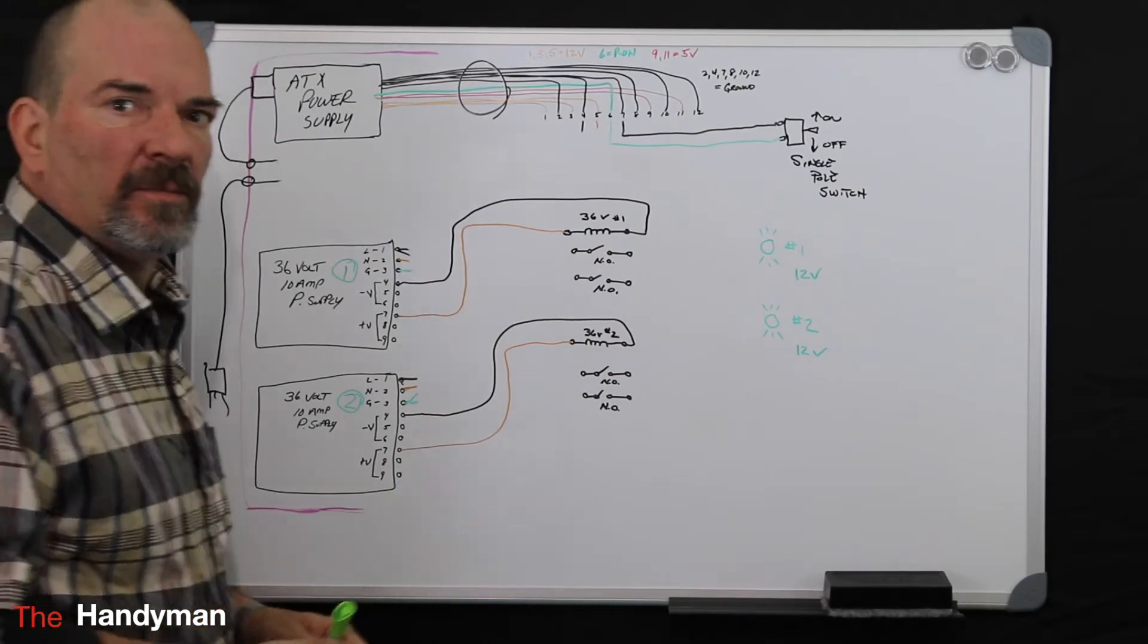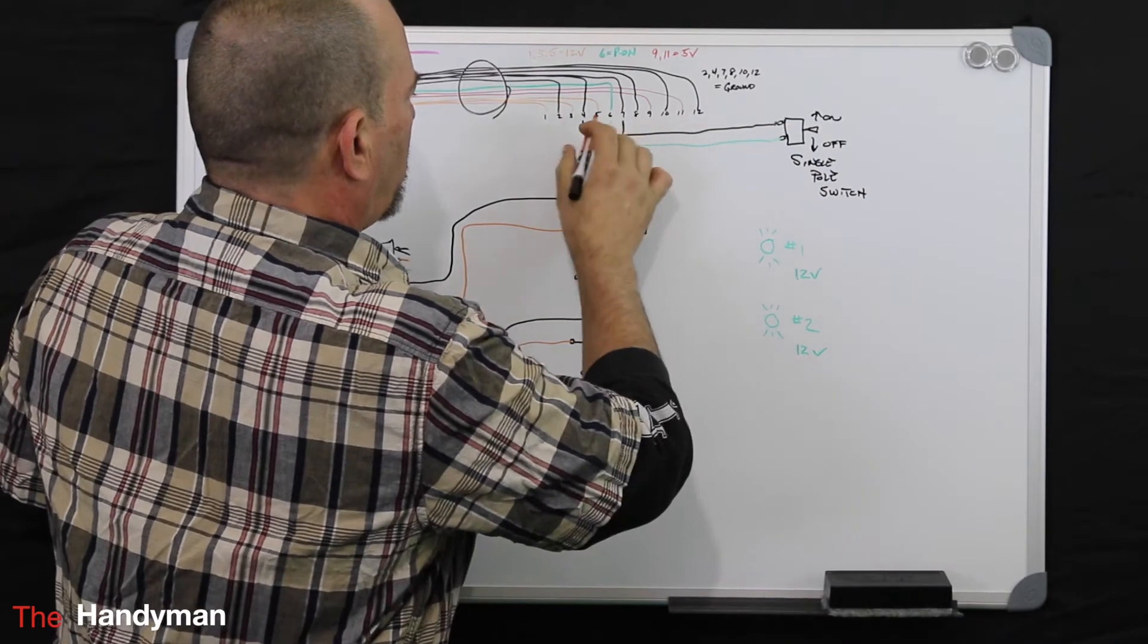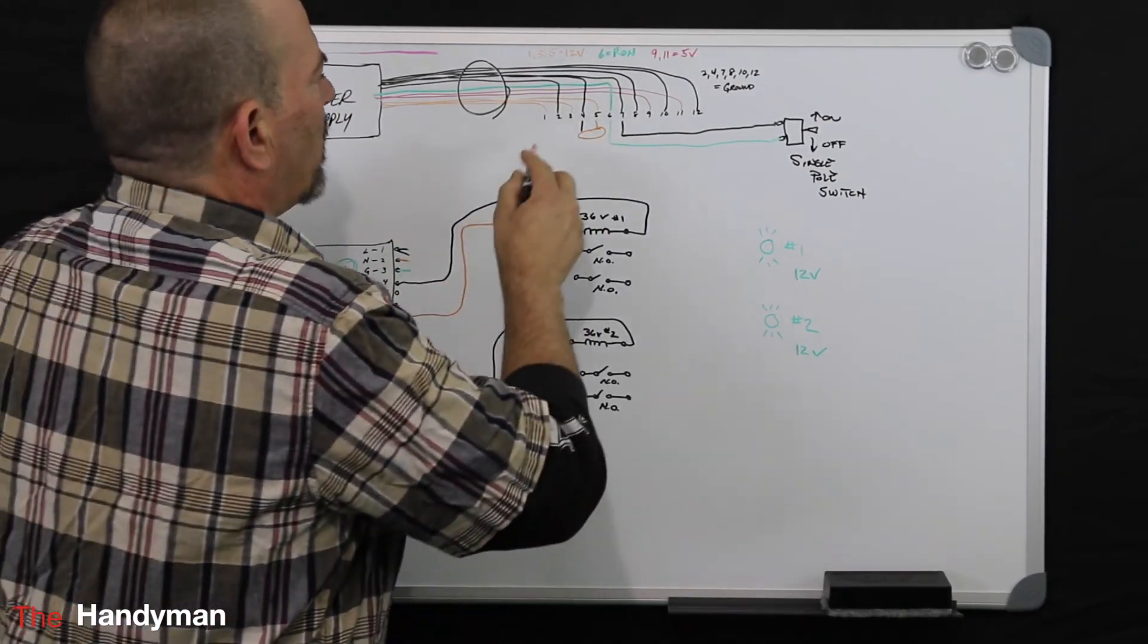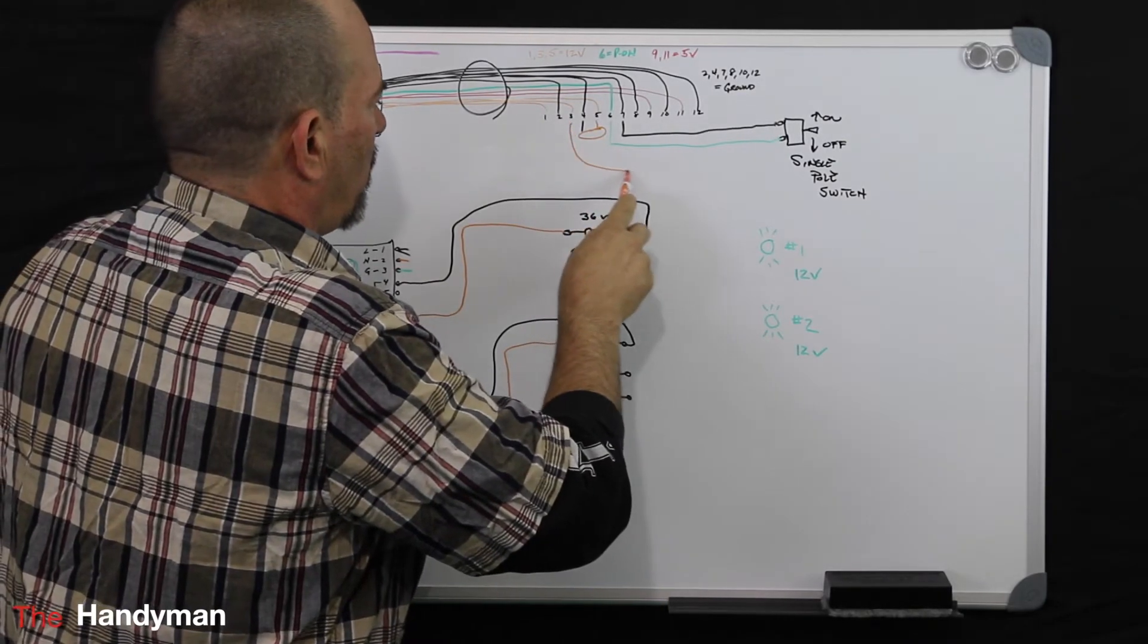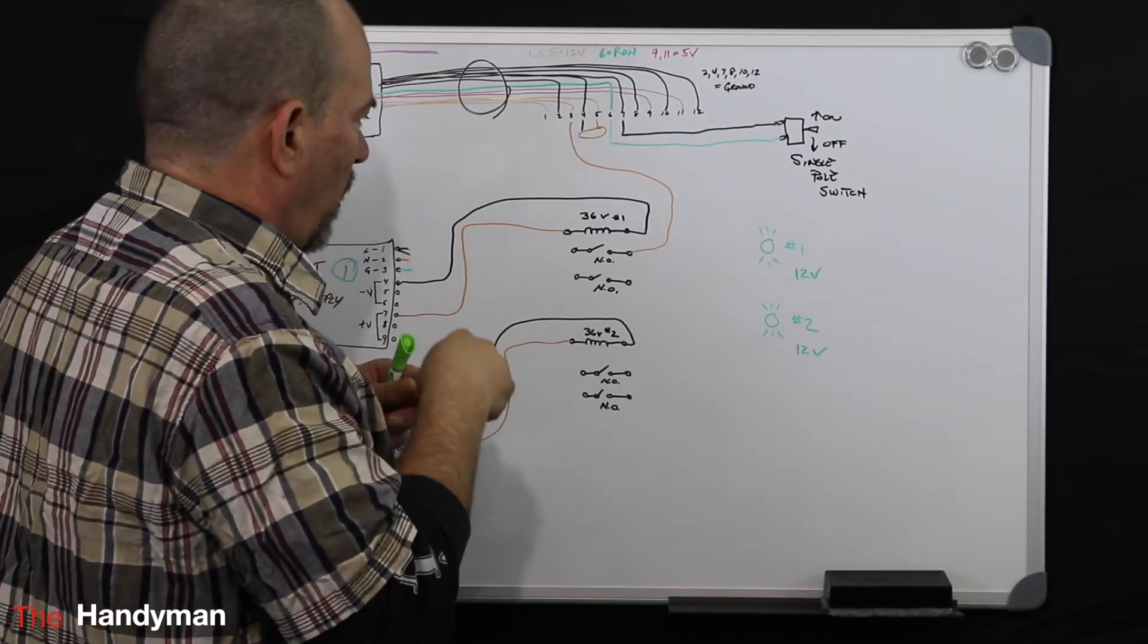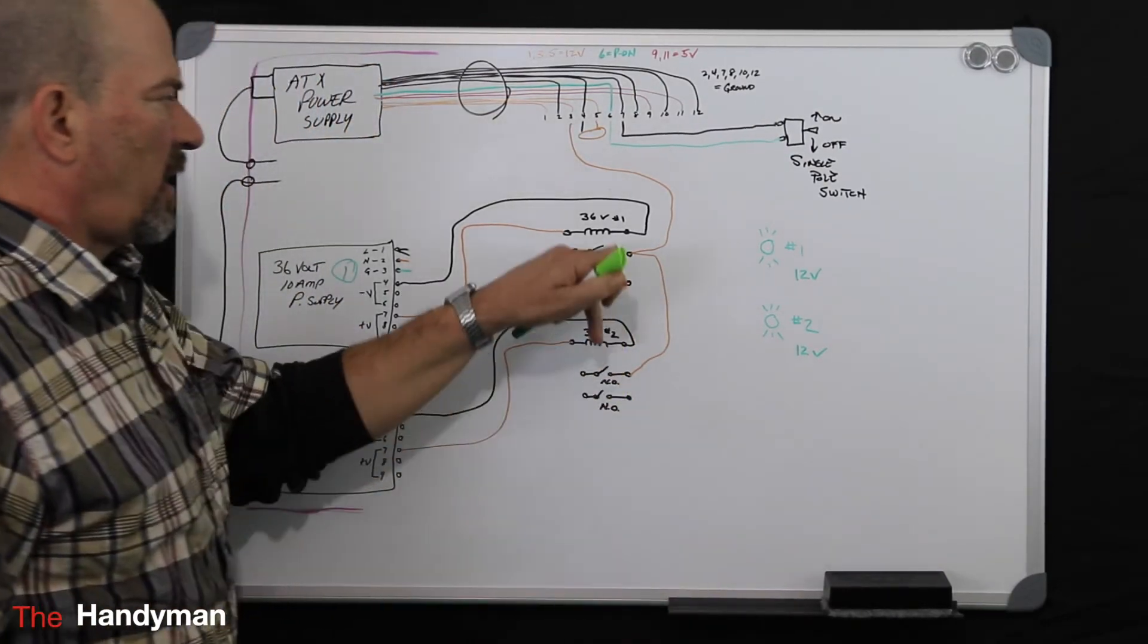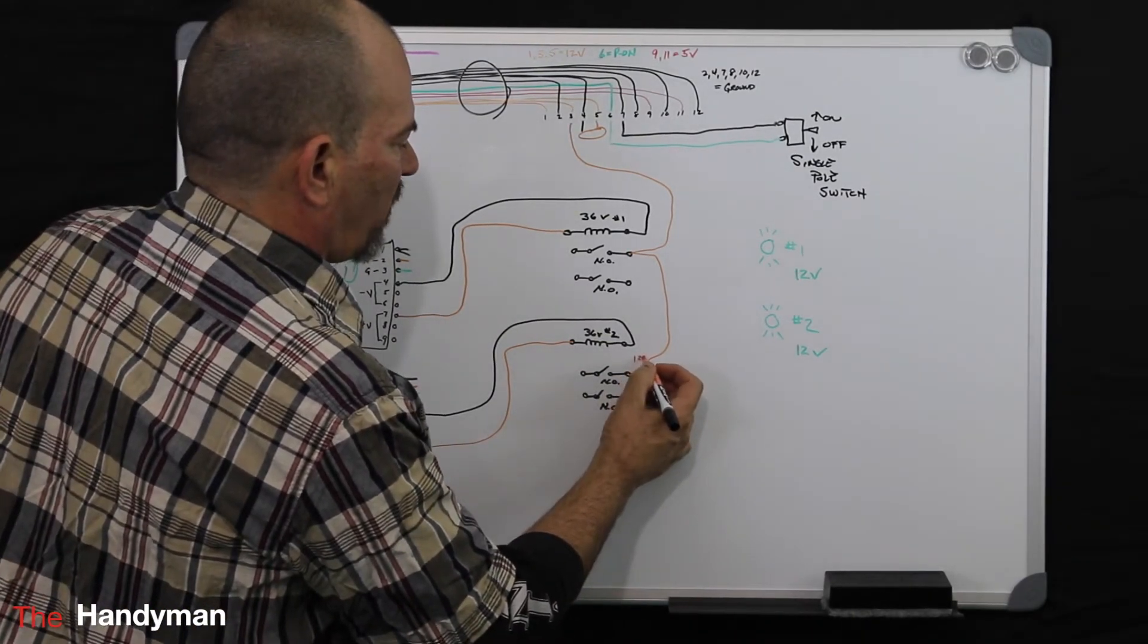So what you need to do here is you need to take your 12 volts. We've already used points 4 and 5 up here, so we're going to take 12 volts off number 3. And you can jumper these and put them to one side of your normally open contacts. So this is your 12 volts supplying one side.